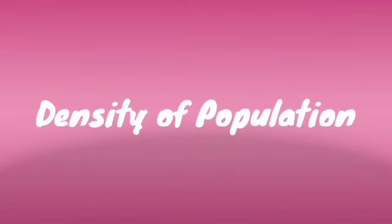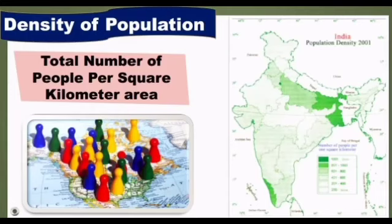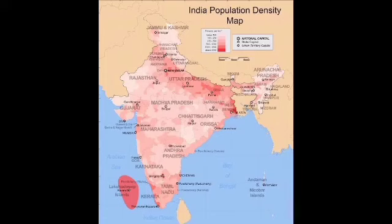Let us study the density of population. Inhabitation is not the same everywhere in India. The density of population refers to the number of people per square kilometer area. This differs in various states in India.